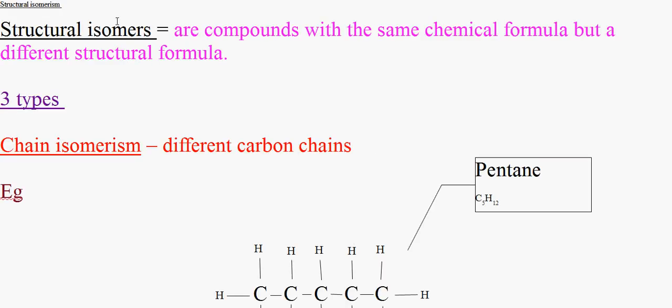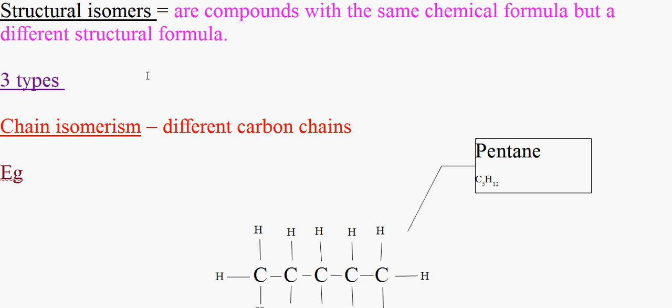So there are three main types of structural isomers. One of the types are chain isomers.